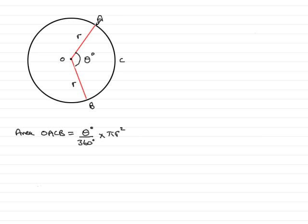And again, if we were trying to find the arc length ACB, then the arc length ACB would equal a fraction θ degrees over 360 degrees of the circumference, 2π R.